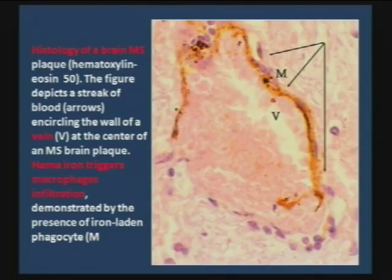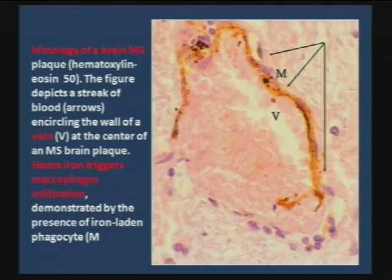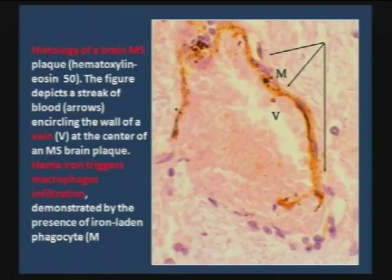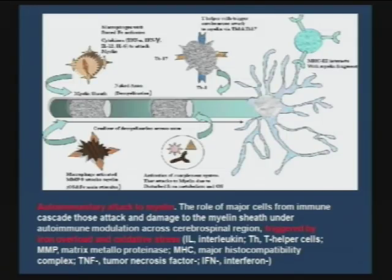If CCSVI is a malformation that is found at birth associated with MS, it may be that CCSVI makes things worse for the natural history of the MS disease. This is talking about the autoimmune theory, which a lot of people now are challenging, and all we want to say here is that it might be triggered by overloaded iron and oxidative stress.